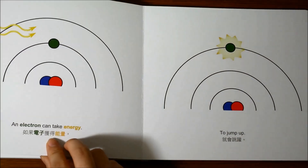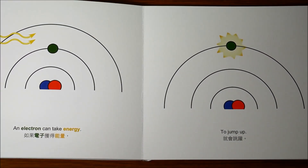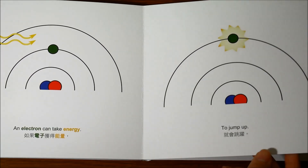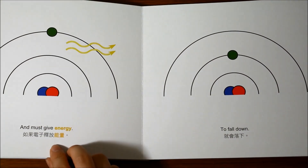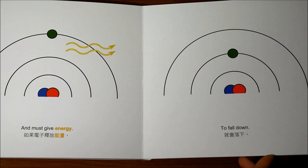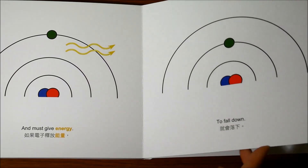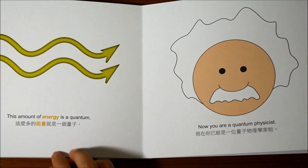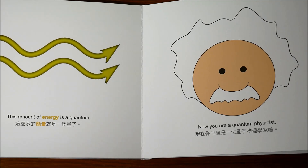An electron can take energy to jump up, and must give energy to fall down. This amount of energy is a quantum. Now, you are a quantum physicist.